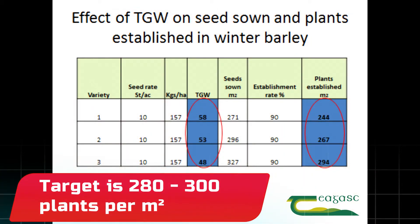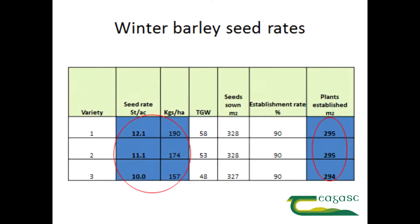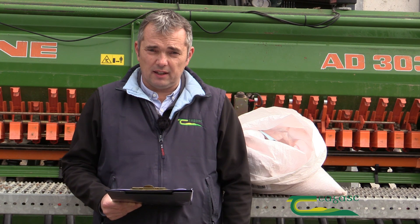So obviously, with the higher thousand grain weight, we haven't put out enough seed. If we look at this next table, we can see where we base our calculation on the number of plants we need established — in this case 295 plants per square meter. We can see on the left hand side here that the range of seeding rates for the three different varieties changes from 157 kilograms per hectare for the lower thousand grain weight, up to 190 kilograms per hectare for the higher thousand grain weight. So again, that will have a big impact on the level of seed that we need to put out.